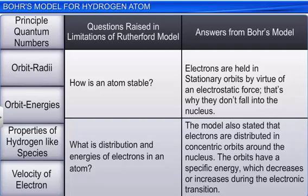According to Bohr's model, electrons are held in stationary orbits by virtue of an electrostatic force. That's why they don't fall into the nucleus. The model also stated that electrons are distributed in concentric orbits around the nucleus.